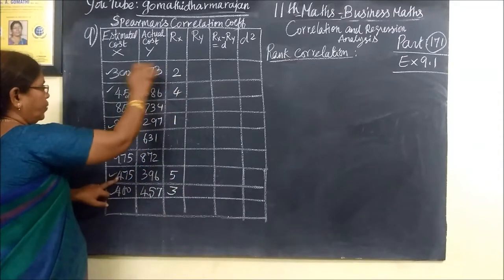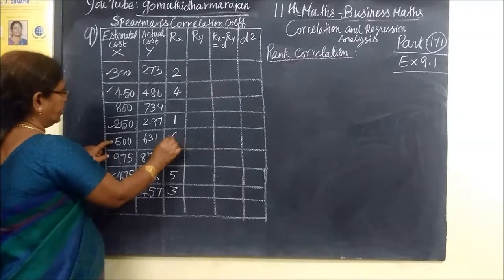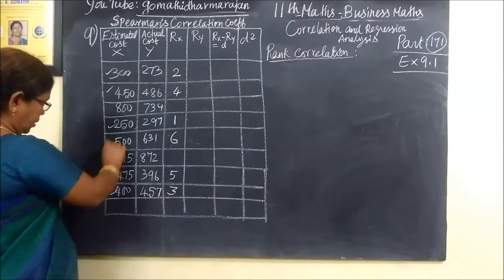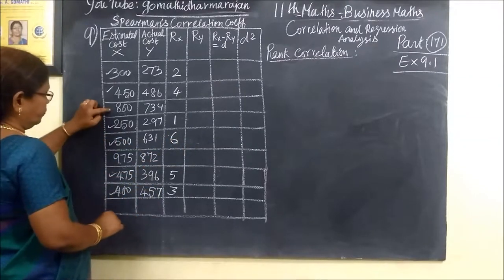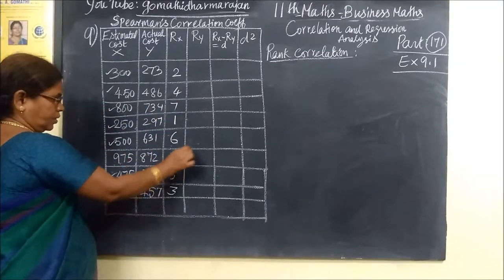So 1, 2, 3, 4, 5. After 5 comes 6. Then which one? This is 7. Then this one is 8.